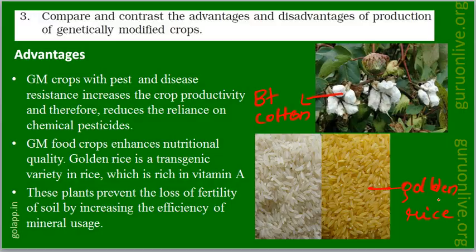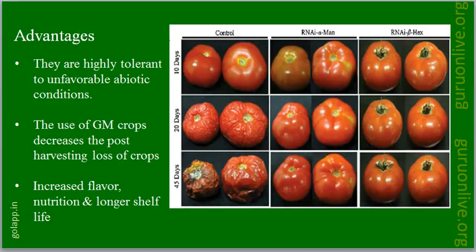Golden rice. These GM crops also prevent the loss of fertility of soil by increasing the efficiency of mineral usage. They are highly tolerant to unfavorable abiotic conditions. The use of GM crops also decreases the post-harvest loss of crops.